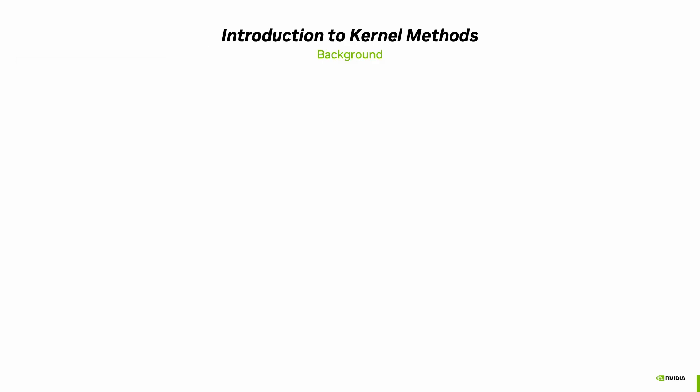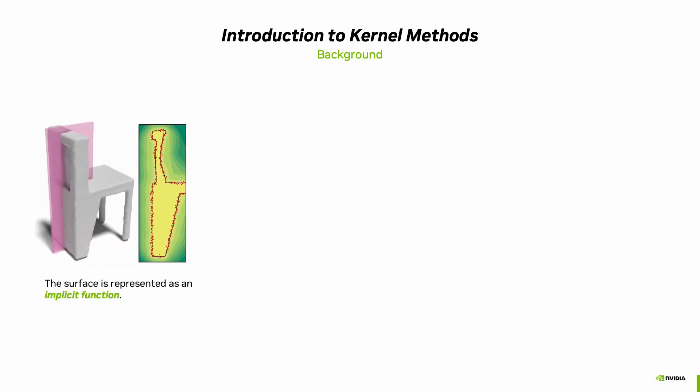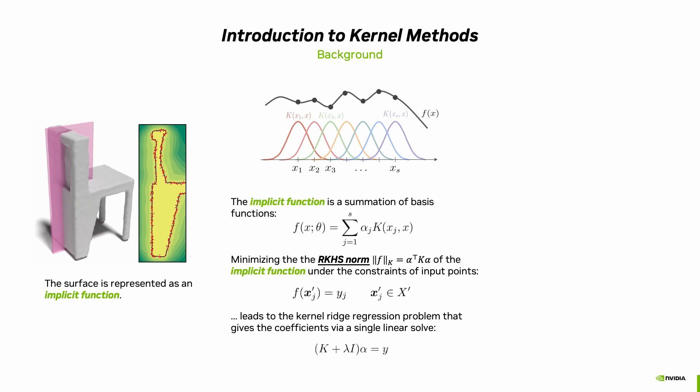Now let's give a brief introduction to the kernel methods. Here, we represent the target surface that we want to reconstruct as an implicit function. This function is a summation of kernel basis functions as shown in the middle column. The kernel method aims to minimize the reproducing kernel Hilbert space or RKHS norm of the function, subject to the constraints of input point positions. This actually involves solving a kernel ridge regression problem that gives the coefficients of the kernel basis via a single linear solve. As the inductive bias of the implicit function is controlled by the kernels, we make it data-dependent and learn the inductive bias from a large-scale training corpus using neural networks.